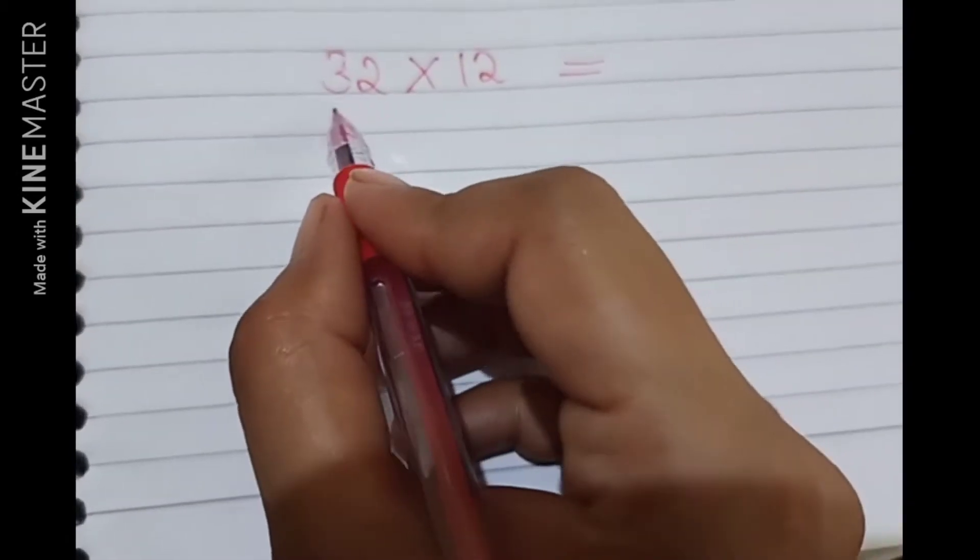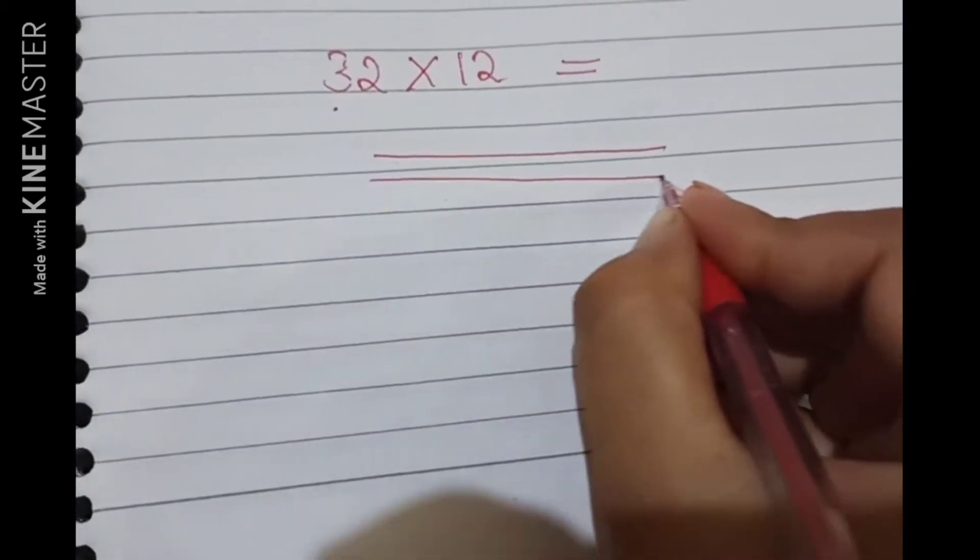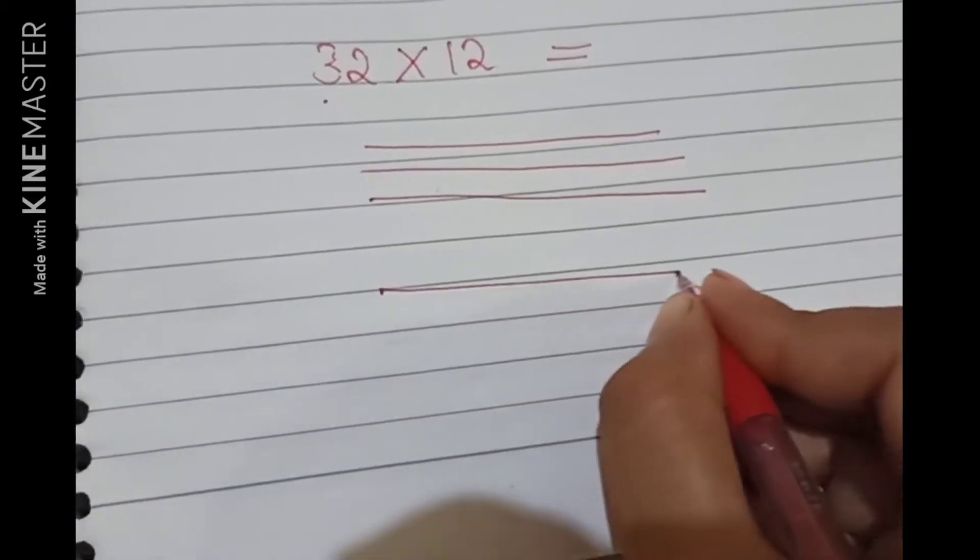We will simply draw three lines. We will draw three lines, and two lines are drawn here.